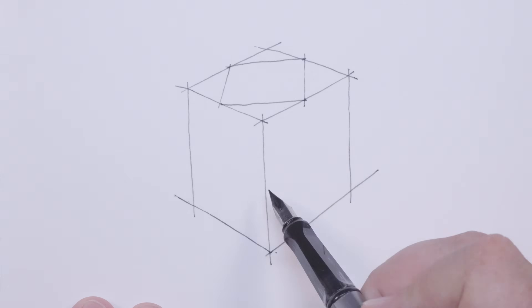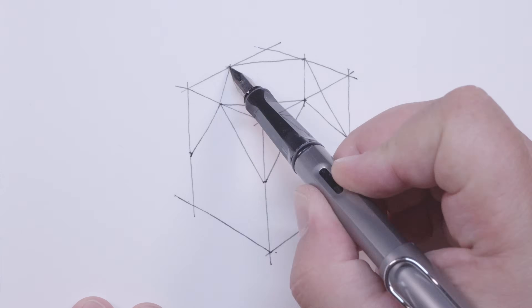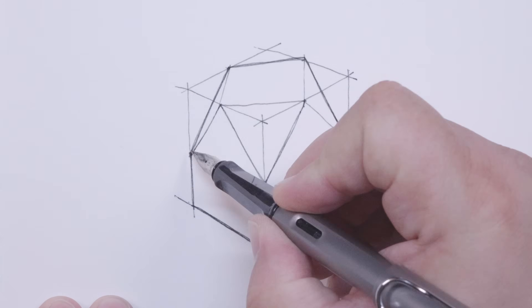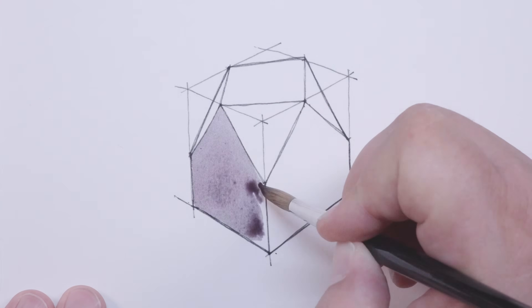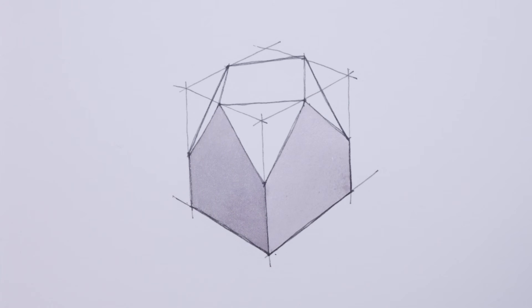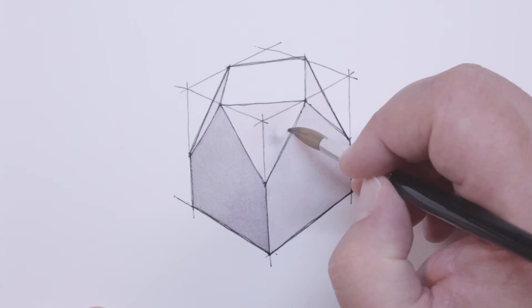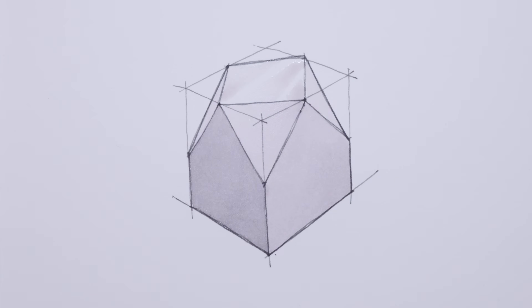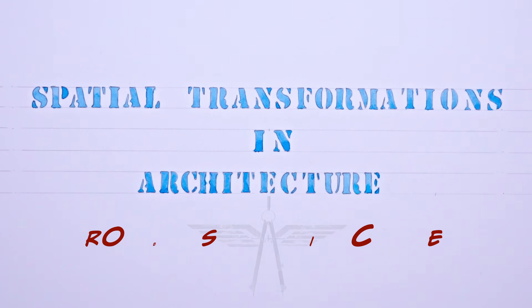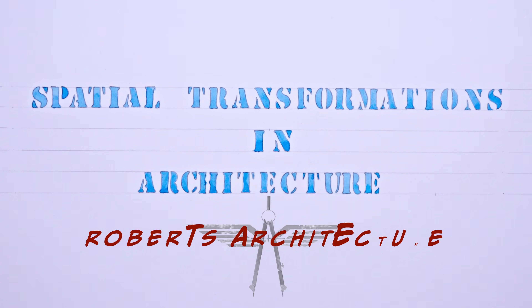What are the first concepts an architecture student should learn? What are the first principles of architectural design all architects should know? This is a complete course in architectural spatial design in one video — spatial transformations in architecture by Roberts Architecture.